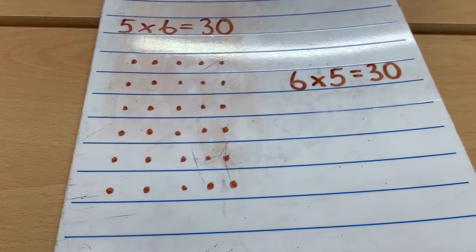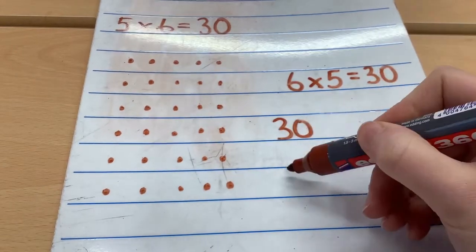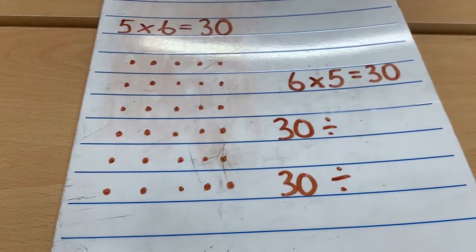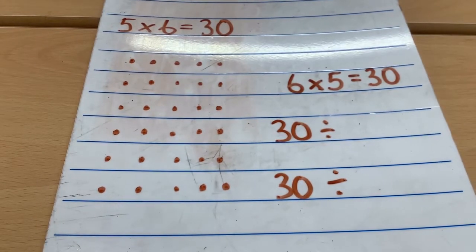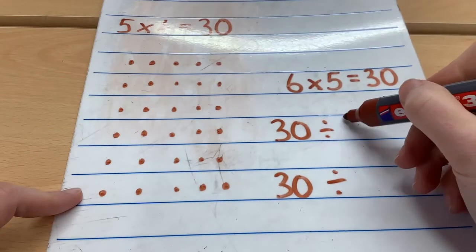If I wanted to do my division calculations, both times I would start with the total. And then I would see that I've got 6 rows here. So I'm dividing by 6.